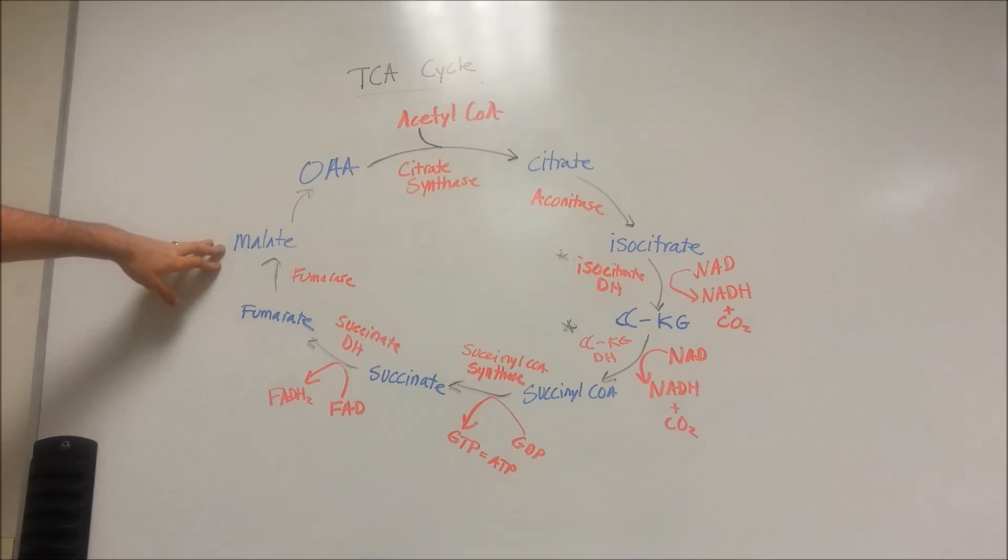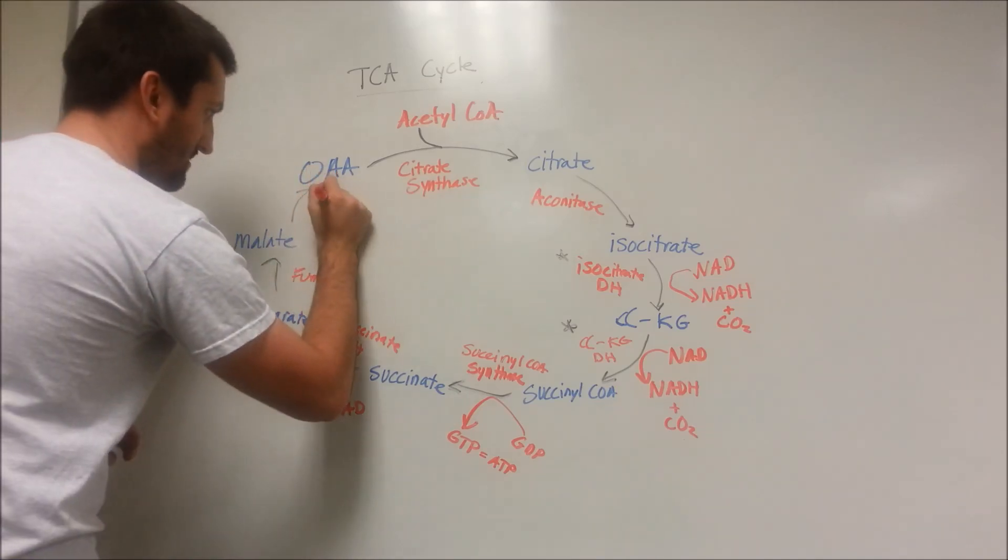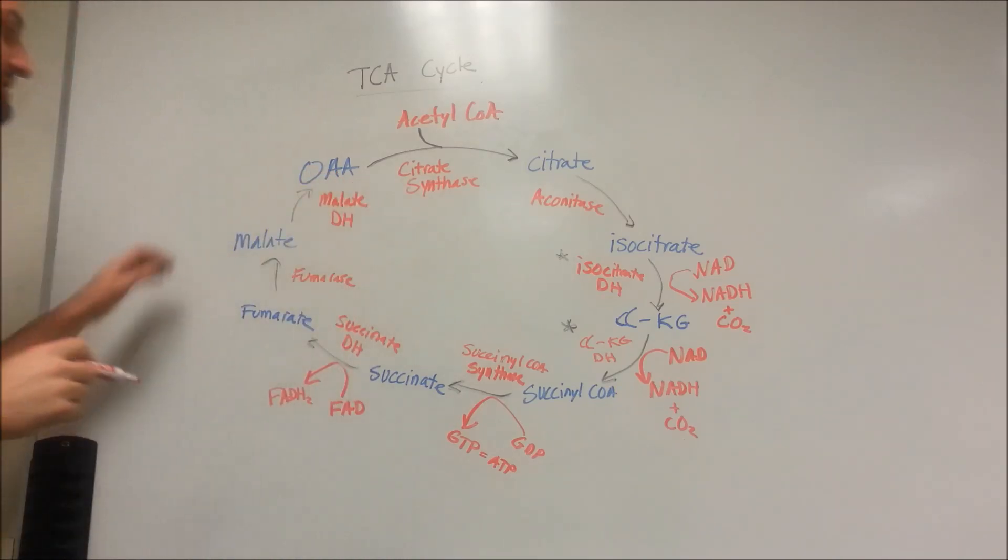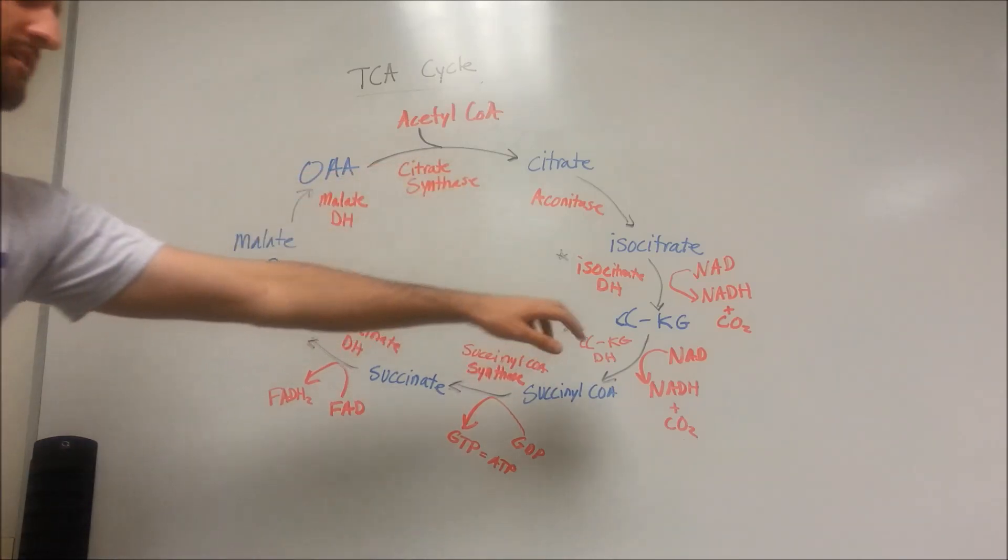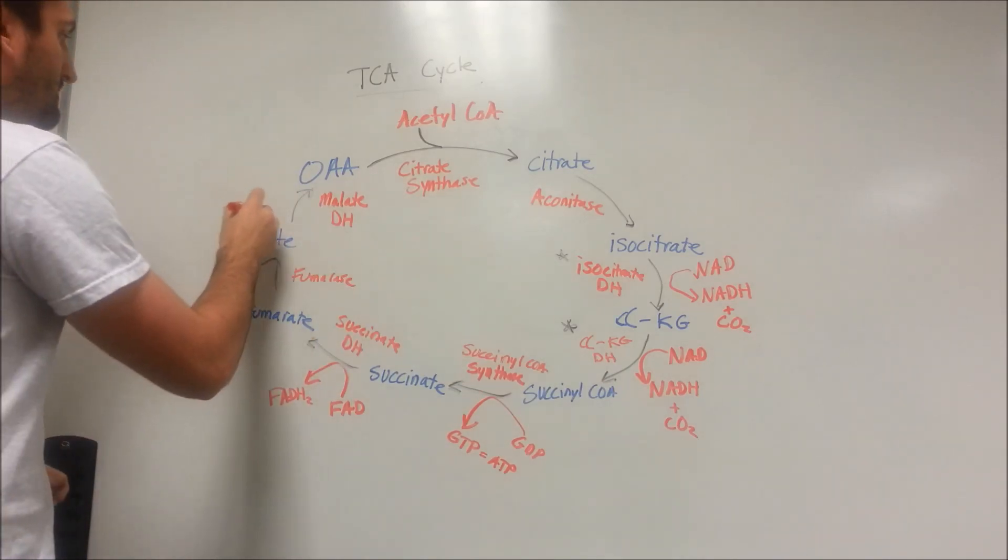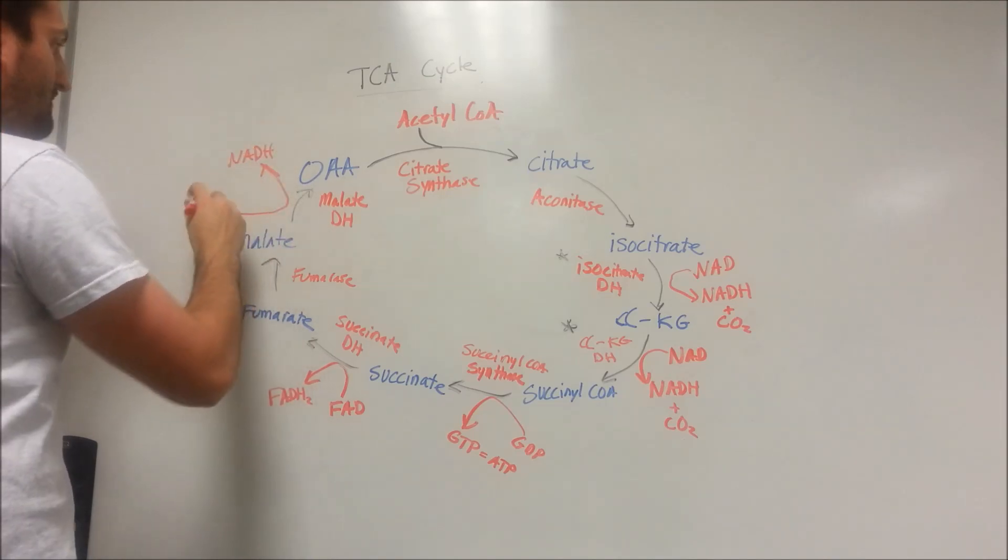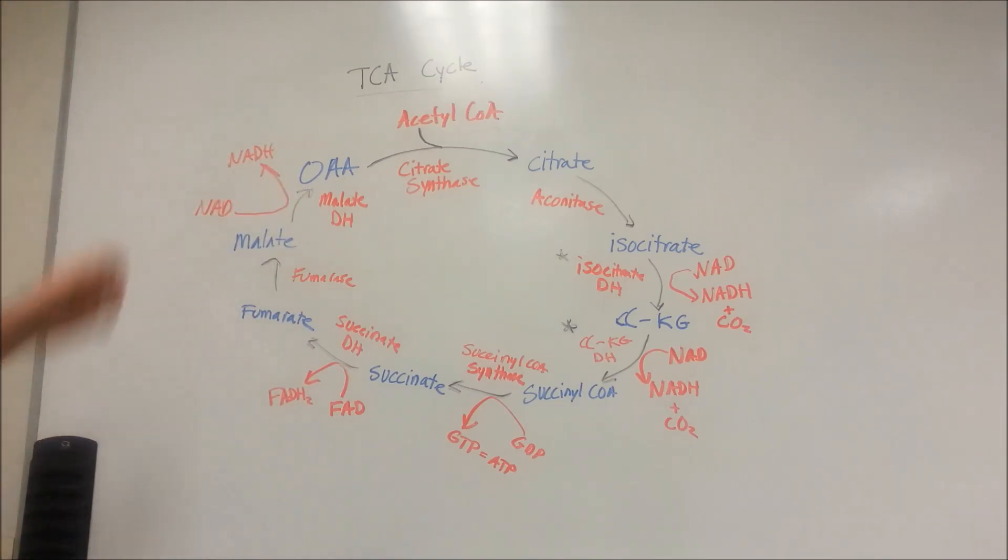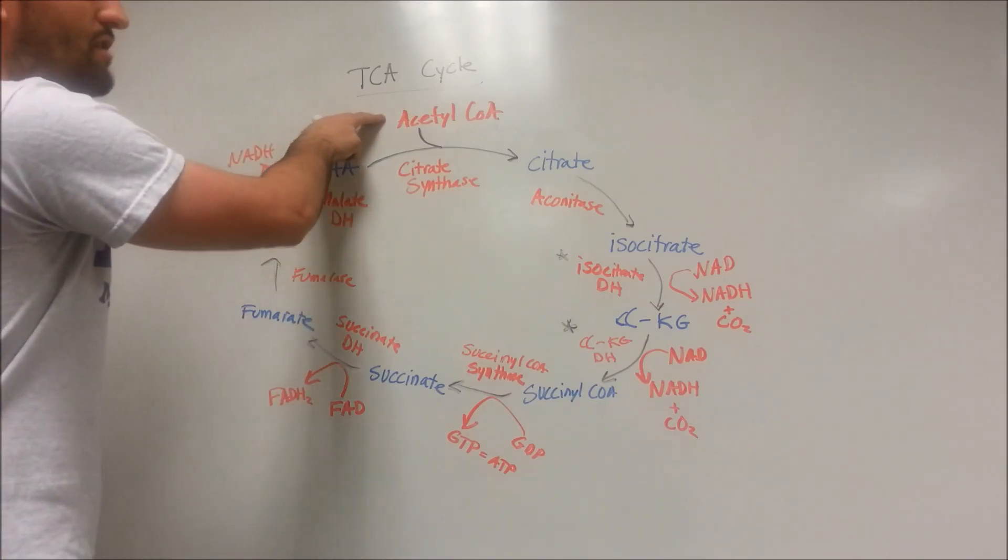Fumarate is going to get converted into malate via fumarase enzyme. Fumarate to malate, not very high yield. Nothing gets kicked off in the middle, it's just rearranging the molecules within each structure. Finally, malate dehydrogenase is going to convert malate into OAA. This is where we get our last NADH. We have one, two NADHs, we need a third one. So let's kick off another right there. NAD gets converted to NADH. That's our final and third one. That is our full cycle.